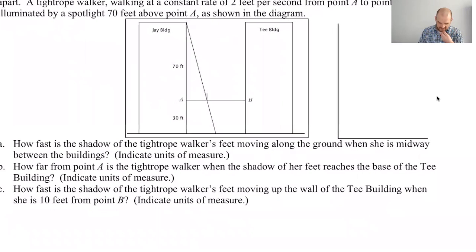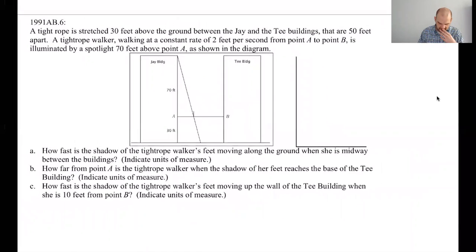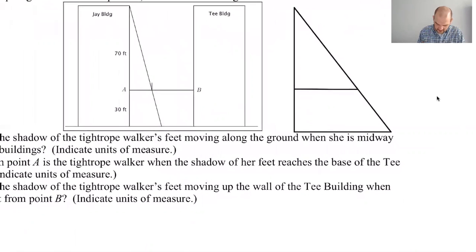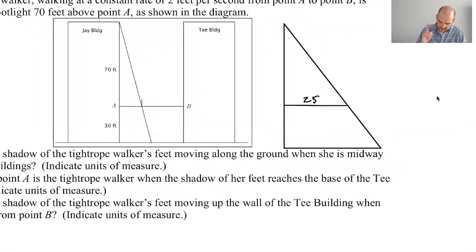So this is going to be 50, no it isn't, it's going to be 25 because she's halfway. When she is halfway, what am I answering? How fast is the shadow of the tightrope walker's feet moving along when she is midway between the buildings? So this will be 25. I think I got this, here we go. So halfway, so this will be 25, right, so the whole thing is 50, and so she's only going to be 25.